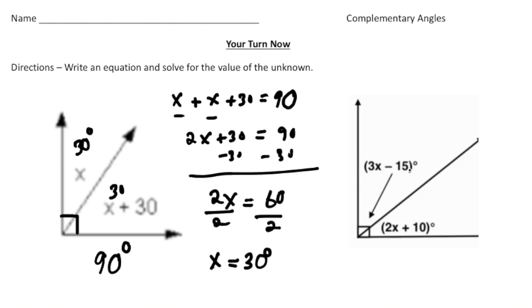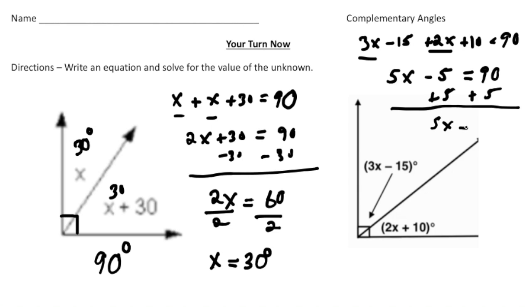Now this one here we have 3x minus 15 and then 2x plus 10. So our equation is going to be 3x minus 15 plus 2x plus 10 equals 90. And now I can combine the 3x and the 2x to give us 5x. And then negative 15 and 10 is minus 5 equals 90. Now just solve for x by adding 5 first. And you get 5x equals 95. Divide both sides by 5. And we get a solution of x equals 19. How'd you do?